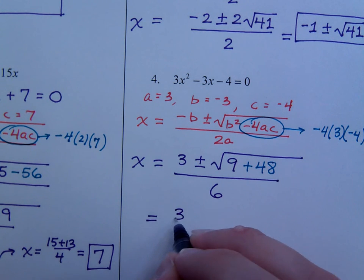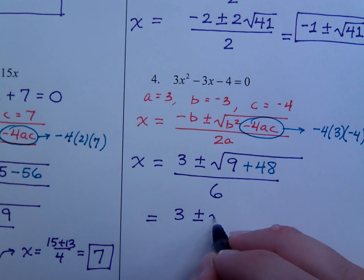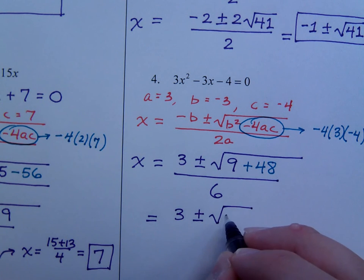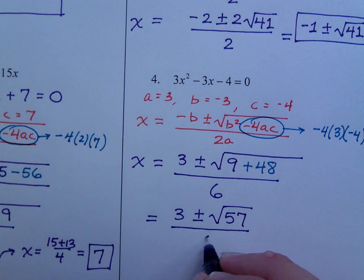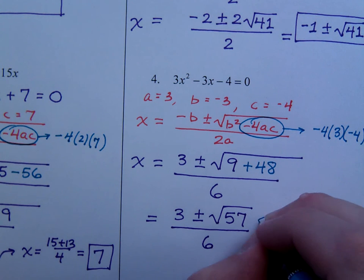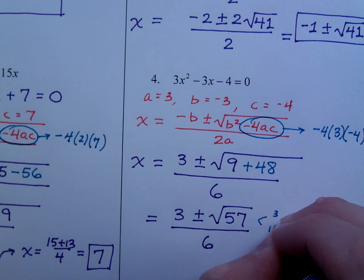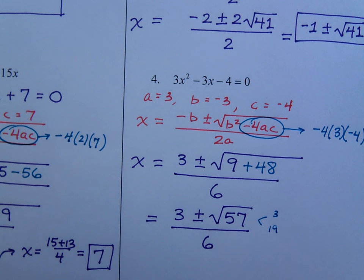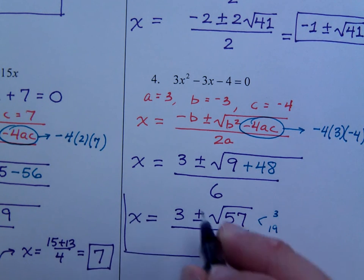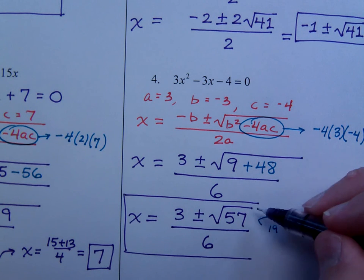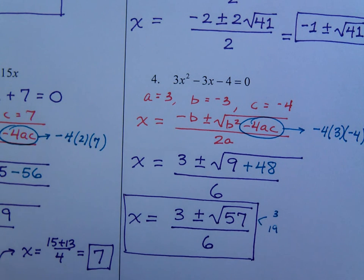So we have 3 plus or minus the square root of 57, and that's all divided by 6. Now if you look at the square root of 57, he does factor, but it's just 3 times 19, so nothing good comes from that. So this is our solution. 3 plus or minus the square root of 57, all over 6.